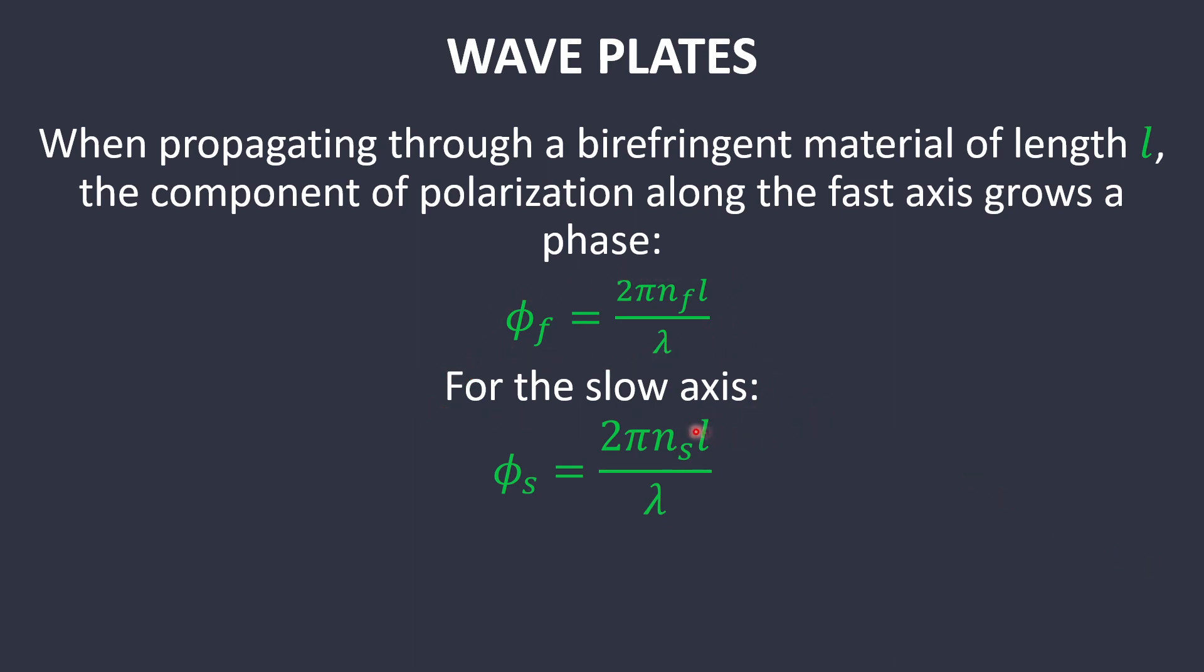For the slow axis, it garners a slow phase shift, which is dependent upon the index of refraction along the slow axis and the index of refraction along the fast axis of the birefringent material. Therefore, a wave traveling through this material will garner a phase shift difference between its two components, the component along the fast axis and the component along the slow axis.